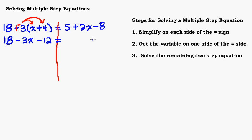On the right hand side I have 5 plus 2x minus 8. I can combine my like terms: 5 and negative 8 combine to give negative 3, and I still have my positive 2x, so I bring that down.